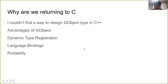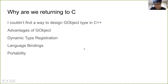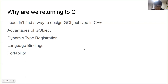However, we are returning to C. There are several reasons. First, I couldn't find a way to design the engine with GObject in C++. For the iBus engine, we should design the engine on GObject, but it couldn't be done in C++.